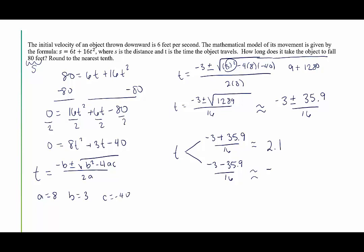For the bottom one, we end up with negative 38.9 divided by 16. It doesn't even matter what this is. This is going to end up being negative. And we don't have time being a negative, right? That doesn't make any sense. Time can only be positive. So we're going to throw out that possible solution. Meaning it's going to take the object 2.1 seconds to travel 80 feet. Wow, that is moving very quickly.